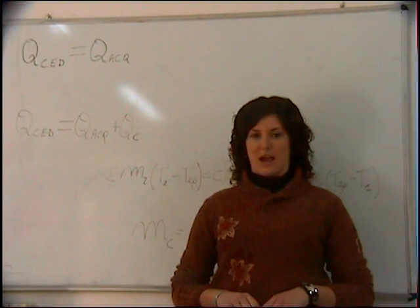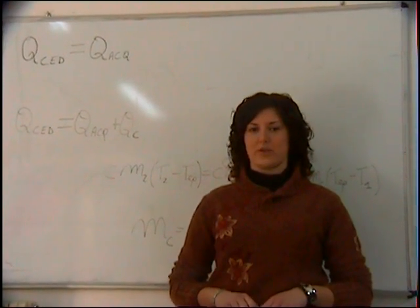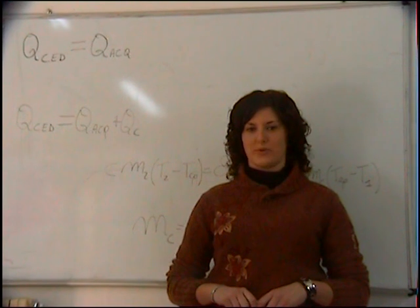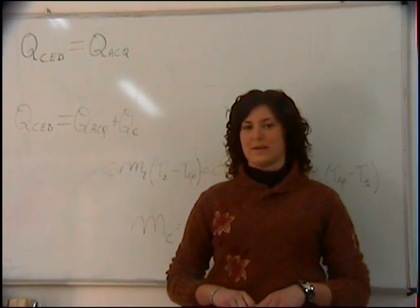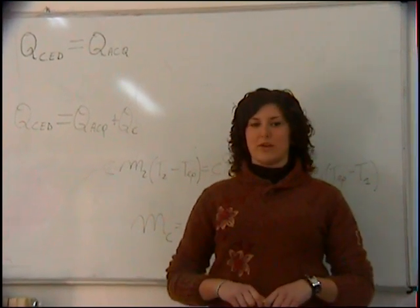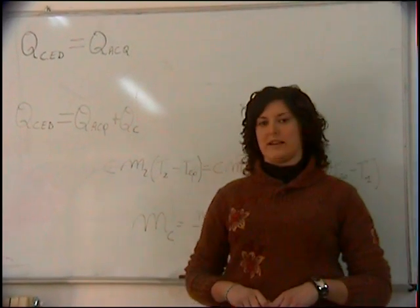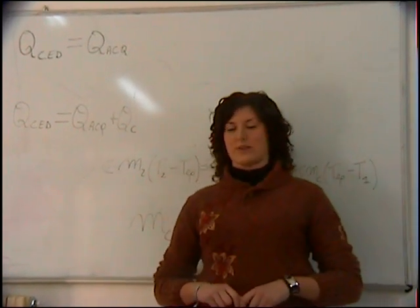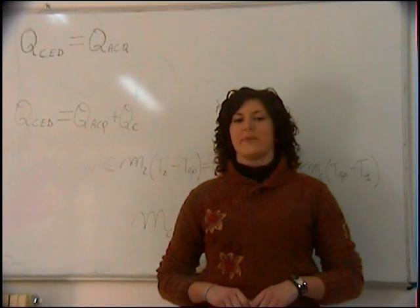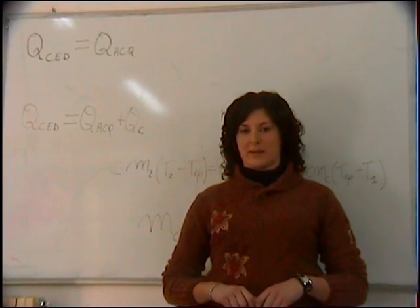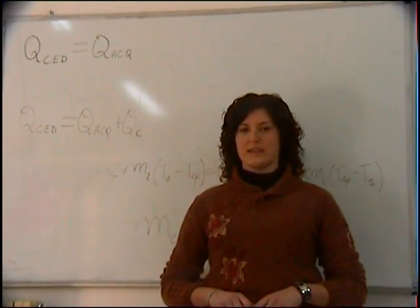supponiamo di avere due masse d'acqua M1 ed M2 con temperatura diversa T1 e T2, con T2 maggiore di T1. Mescolando queste due masse d'acqua, quella con il calore Q elevato cederà il suo calore alla massa più fredda, fino a quando non si raggiunge una temperatura di equilibrio che indicheremo con T e Q.